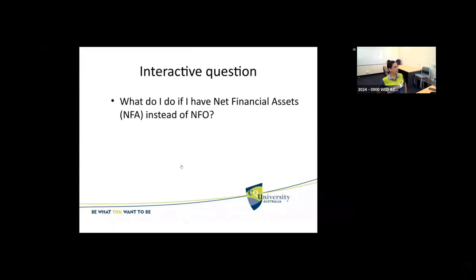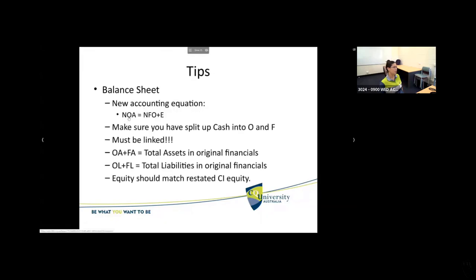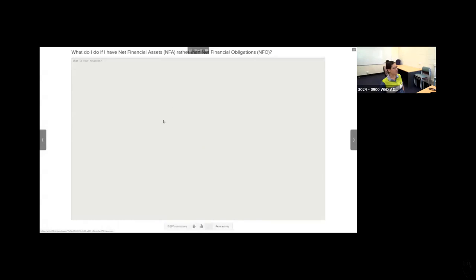Interactive question: what do I do if I have net financial assets instead of net financial obligations? Our new accounting equation was net operating assets equals net financial obligations plus equity. What if instead of net financial obligations you've got net financial assets — a debit instead of a credit there? Some students also have net operating liabilities instead of net operating assets. Click onto the next slide and fill in what you think you would do if you've got net financial assets rather than net financial obligations when restating your balance sheet.